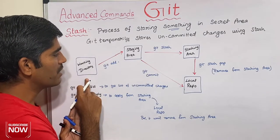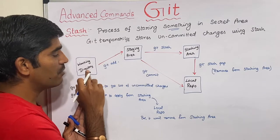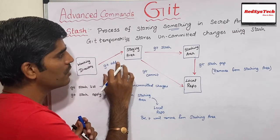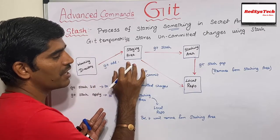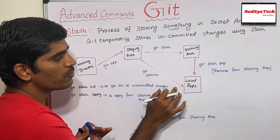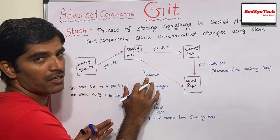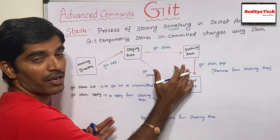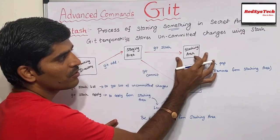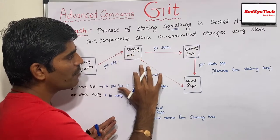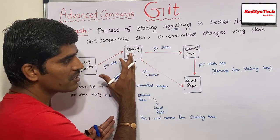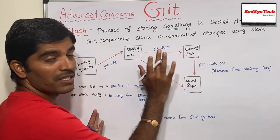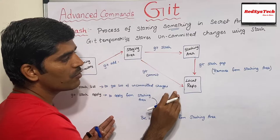Looking at the flow diagram: from the working directory, if you want to push changes to the staging area, you give 'git add dot'. From the staging area you are ready to go to the local repository with 'git commit'. But if for some reason you don't want to commit, you can give 'git stash', which moves all uncommitted changes from the staging area to the stashing area, where they remain.